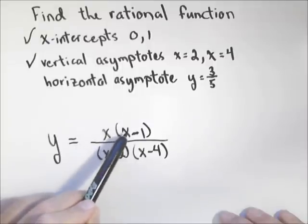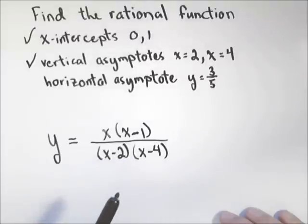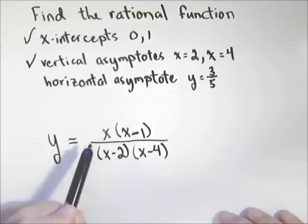Now if we look, we have a quadratic on top because x times x is x squared, and a quadratic on bottom, x times x is x squared. That means it goes to the ratio of their coefficients, which right now is one over one.